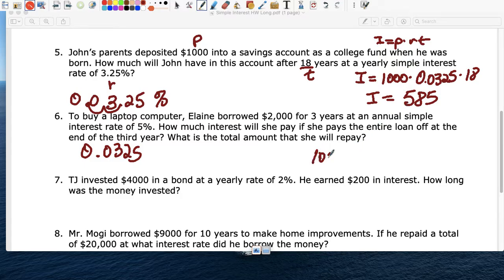1,000 times 0.0325 times 18 is $585. So when John comes back, 18 years later, he's going to have 1,000, right, that was deposited initially, plus the extra interest. This is the interest, $585. So his account is going to have $1,585.